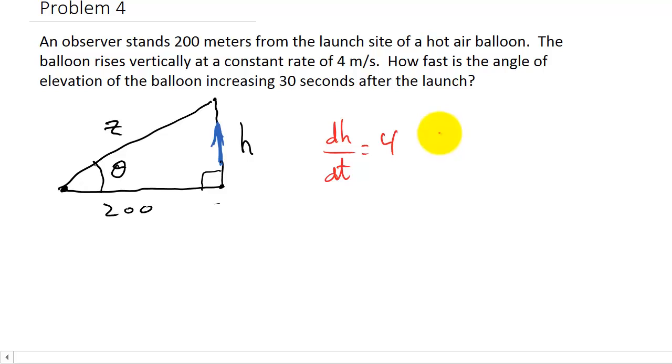So we could say that h is equal to, remember the distance, well we know that distance is equal to rate times time. The rate that it's rising is 4 meters per second and the time is 30 seconds. And so that would be 4 times 30, which would be 120 meters. So we know what h is. All right, so now we've got everything that they've given us. So let's go ahead and set up our equation.